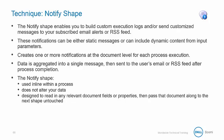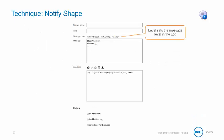Data can be aggregated into a single message and then sent to the user's email or RSS feed after process completion. The Notify shape is meant to be used inline within a process — it does not alter documents or data that flow through it. It is designed to read in any relevant document fields or properties, then pass the document along to the next shape for further processing.